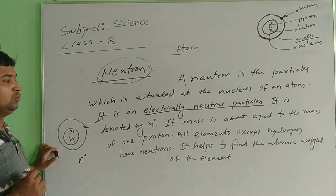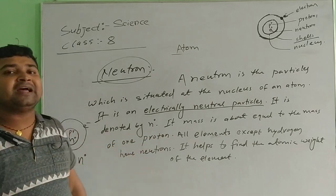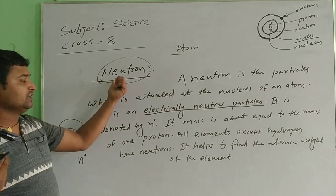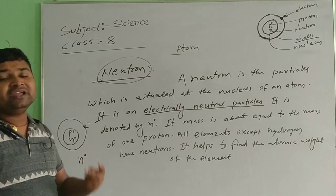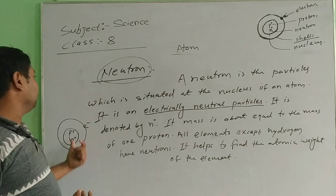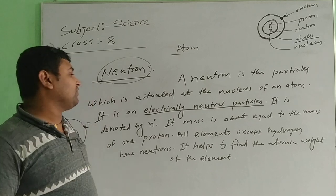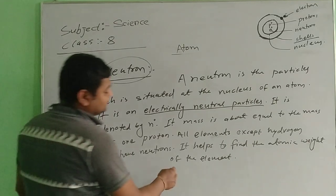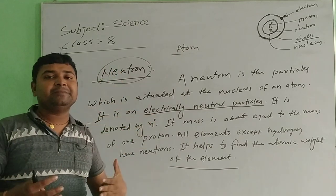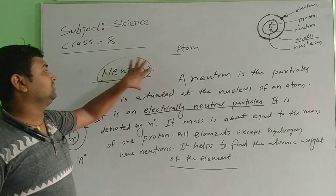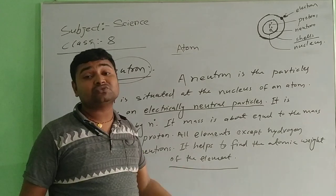The neutron has no charge — it is neutral with a charge of zero. Its mass is equal to that of one proton. All elements except hydrogen have neutrons in the nucleus. These neutrons help to determine the atomic weight of the elements. So neutrons help us find the atomic weight — the number of neutrons, weight of electrons, weight of elements — we can find these.